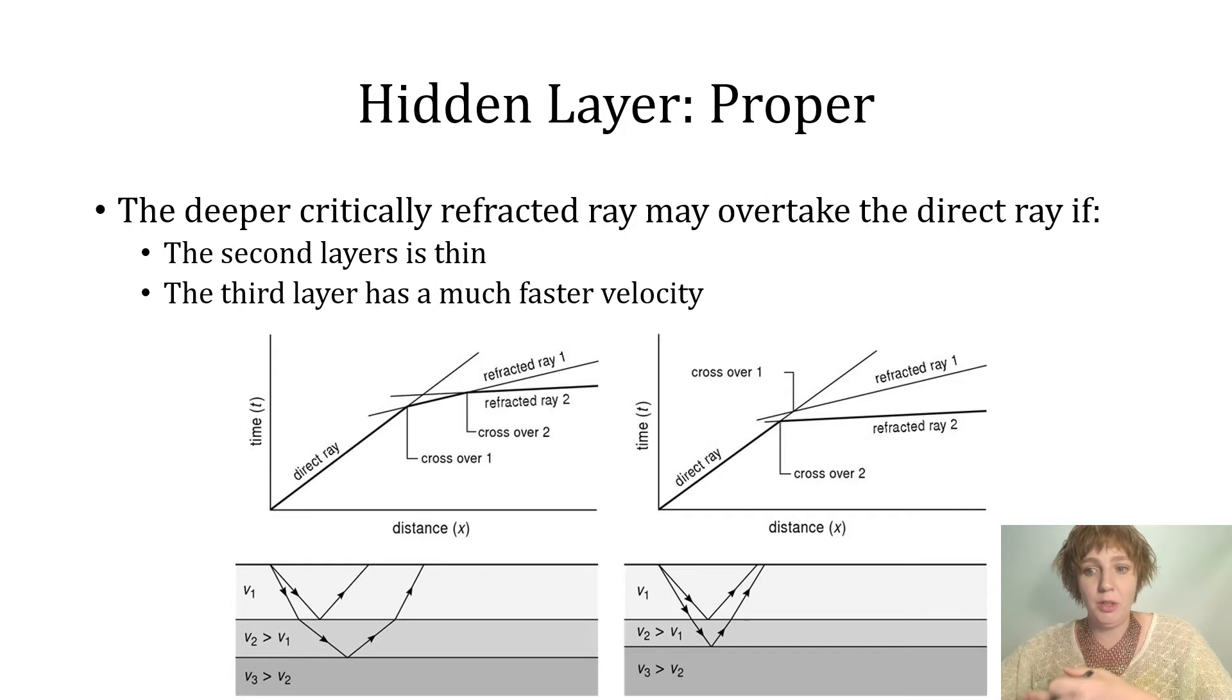The second type of hidden layer that we're going to discuss is the low velocity layer. In this case, when the energy is refracted at the interface, instead of bending away from the normal on a path that could pick it up towards the surface,